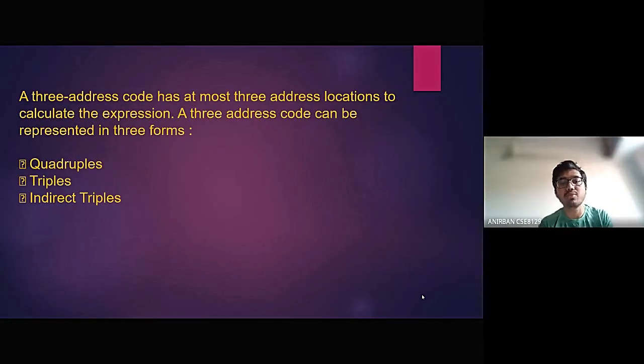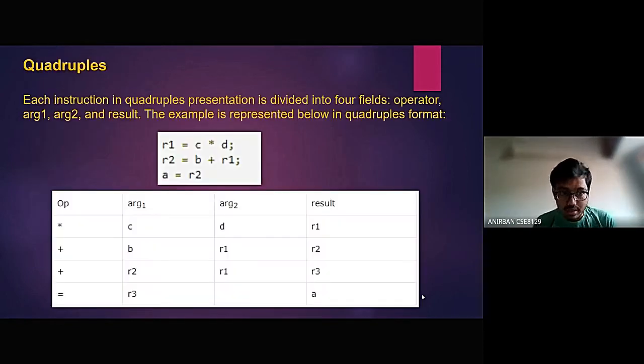A three-address code has at most three address locations to calculate the expression as we discussed earlier. But, a three-address code can be represented in three forms, namely quadruples, triples, and indirect triples.